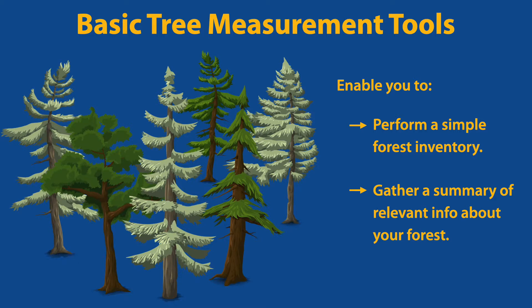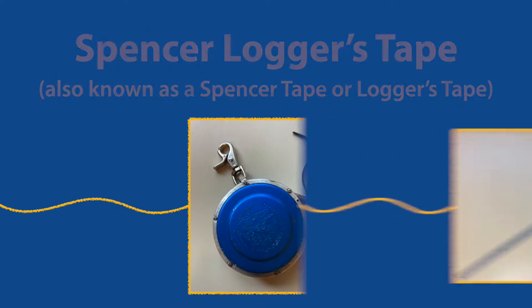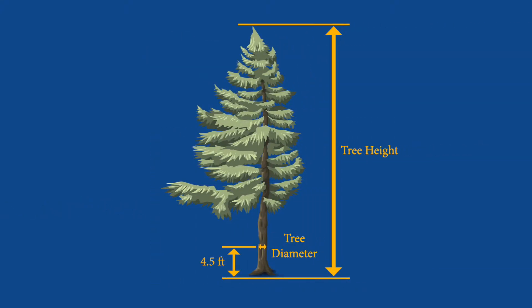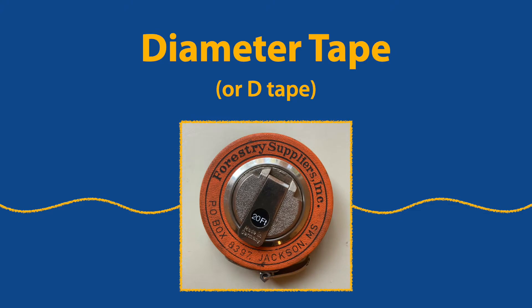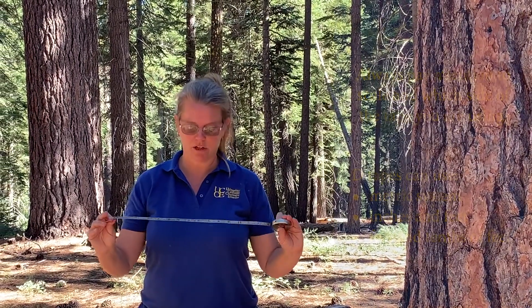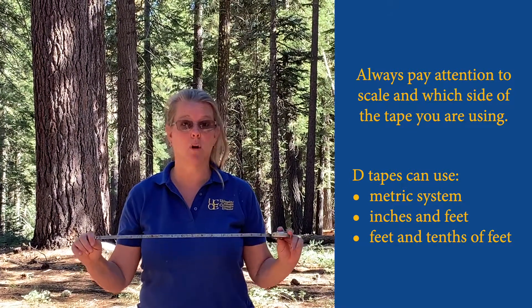The tools you will learn how to use in this video are the diameter tape, Spencer Loggers tape, and Biltmore stick or tree stick. When inventorying the trees in your forest, it's important to measure their height and diameter. First, I'll demonstrate how to use a diameter tape to measure the diameter of a tree. We have a specialized instrument used in forestry called a diameter tape, and it has some different scales on it so that you don't have to do math while you're in the field.